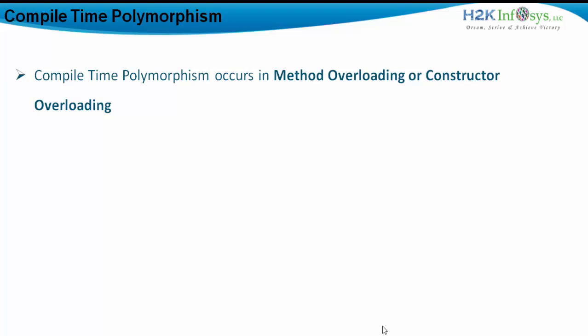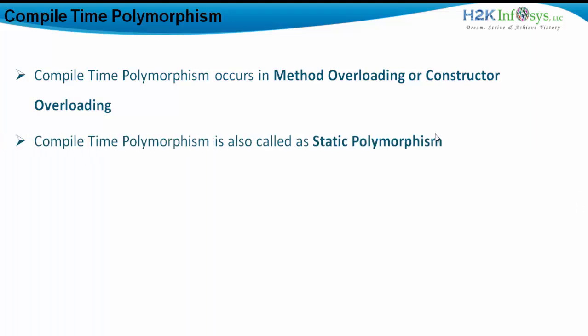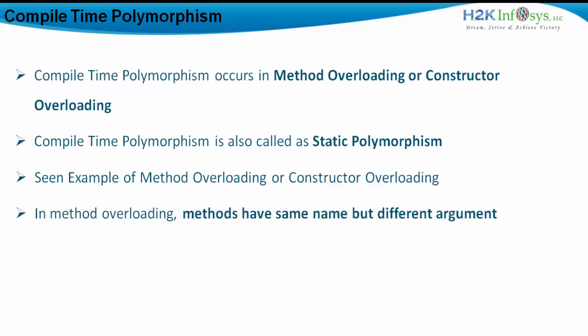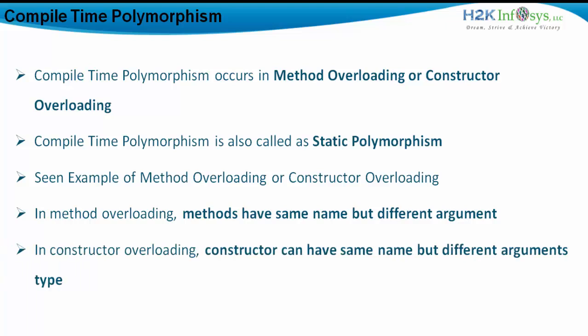Before we understand runtime polymorphism, let us recap compile time polymorphism. It occurs in method overloading and constructor overloading, and is also called static polymorphism. In method overloading, methods have the same name but different arguments. In constructor overloading, constructors have the same name but different argument types. We have already covered compile time polymorphism.